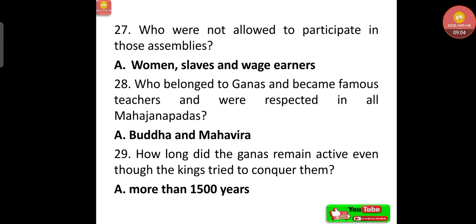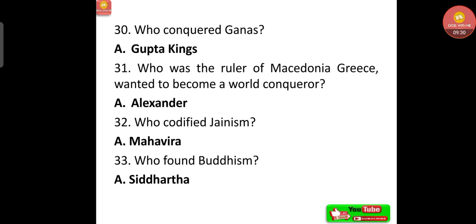Buddha and Mahavira belonged to the Gana and became famous teachers respected in all Mahajanapadas. The Ganas remained active for more than 1,500 years, even though kings tried to conquer them. The Ganas were eventually conquered by the Gupta kings. Alexander, the ruler of Macedonia in Greece, wanted to become a world conqueror.